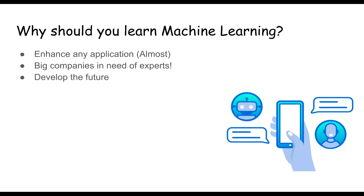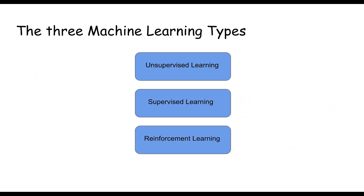The third reason is similar to the second: you are able to join a big company or build your own application, thereby developing the future. Where before we saw areas transformed when the computer was invented, or social life drastically changed when Facebook, Instagram, and Snapchat came along, we are now seeing machine learning changing industries again. Machine learning will take a given area to a whole new level — self-driving cars, drone delivery by Amazon — and all kinds of areas are seeing new possibilities. By learning machine learning you can take part in that development.